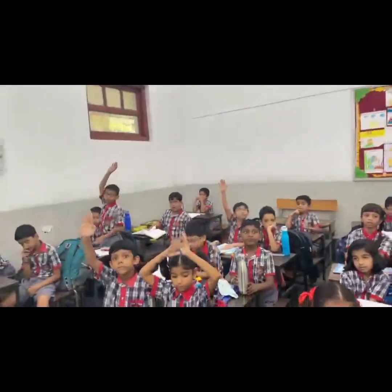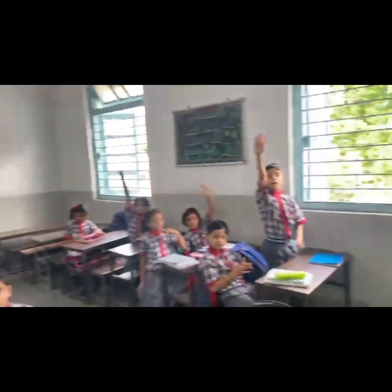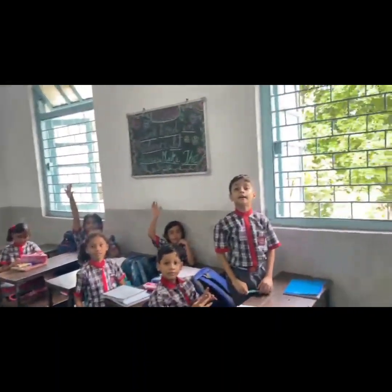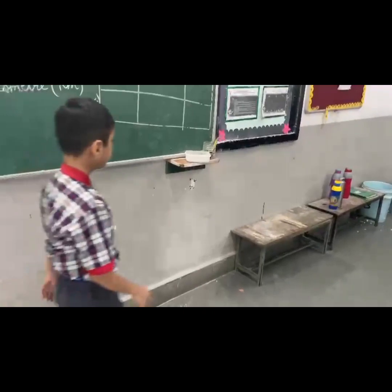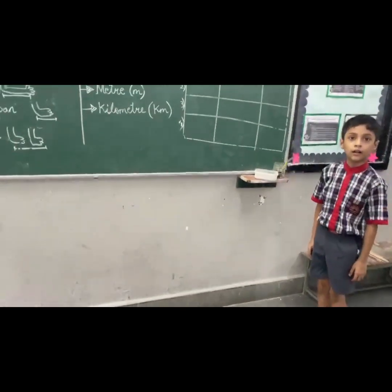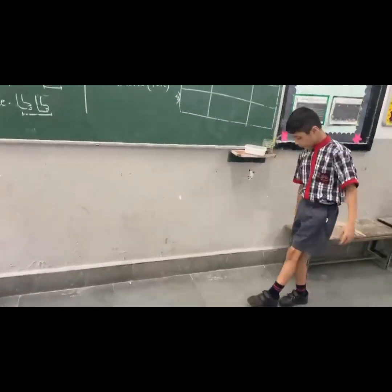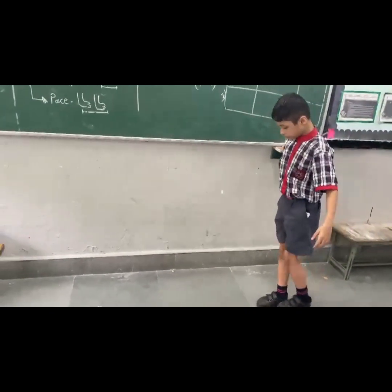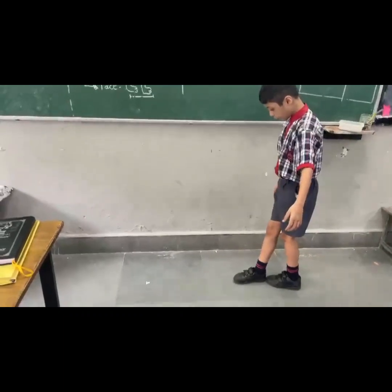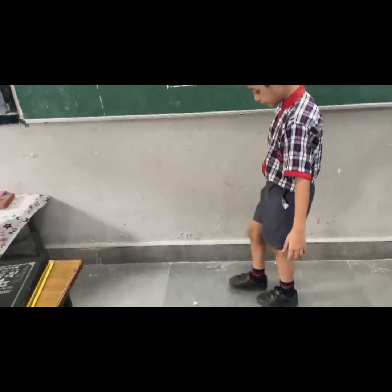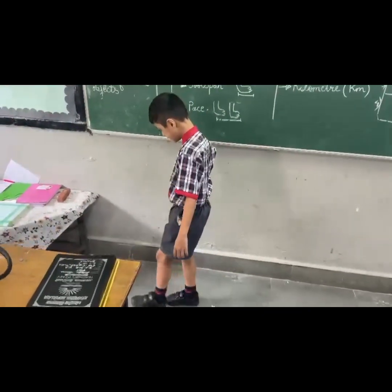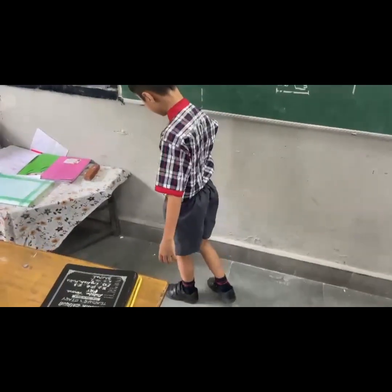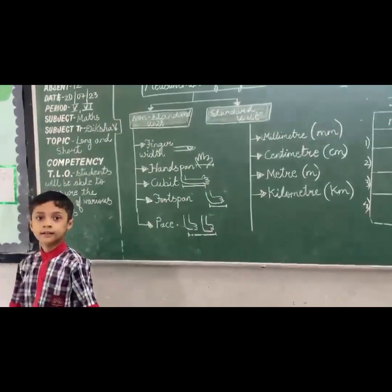Now the fourth method of non-standard unit is? Foot span. Okay, come. Stand there. Okay, start. 1, 2, 3, 4, 5, 6, 7, 8, 9, 10. So 10 foot spans. Go, good.